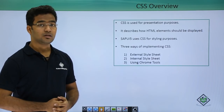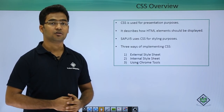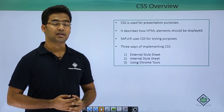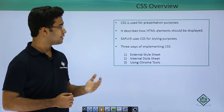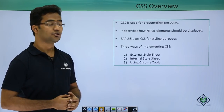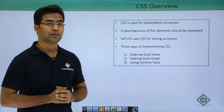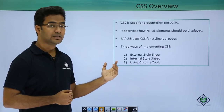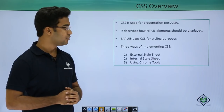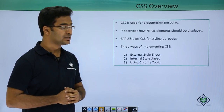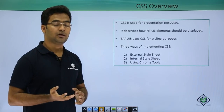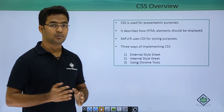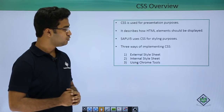Here is the overview of CSS. CSS stands for Cascading Style Sheets and it is used for presentation purposes — mainly for styling a web page — and it describes how HTML elements should be displayed. There are 3 ways of implementing CSS in a SAP UI5 application: first, an external style sheet where we create a separate CSS file; second, an internal style sheet where we write CSS within the view or index.html page itself; and third, using Chrome tools.